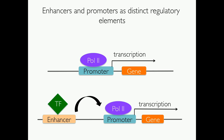On one side we have promoters, defined as gene proximal regulatory elements where general transcription factors bind to core promoter elements and form a pre-initiation complex with RNA-Pol2, thereby initiating transcription at the transcription start sites. In contrast, enhancers are most often defined as transcription factor binding elements that are distal from the gene transcription start sites, and they interact with and activate promoters, regulating transcription at target promoters.